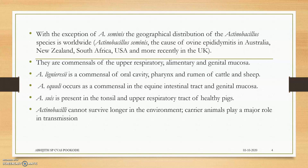They are common commensals of the upper respiratory tract, alimentary tract, and genital mucosa. Actinobacillus equally occurs as a common commensal in the intestinal tract, and Actinobacillus species are present in the tonsil and upper respiratory tract of healthy animals. That is a commensal organism — whenever they get the opportunity to act like a pathogen, they will cause many pathogenic lesions.